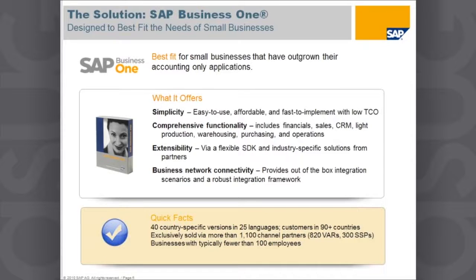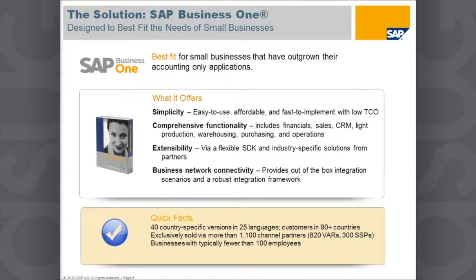We've also got business network connectivity, which gives you the ability to connect your SAP Business One system with your head office, whether it's running SAP Business Suite or another vendor's solution. That integration is provided out of the box — quickly, easily, and without additional software investment. SAP Business One is available in 40 country-specific versions in 25 languages, with customers in more than 90 countries worldwide.